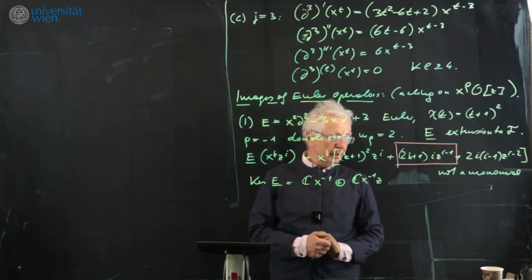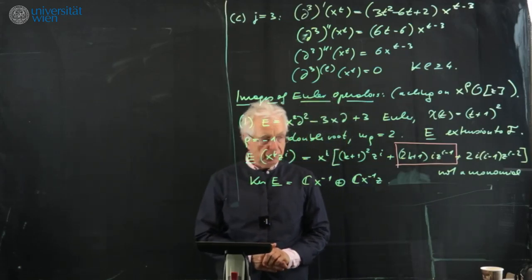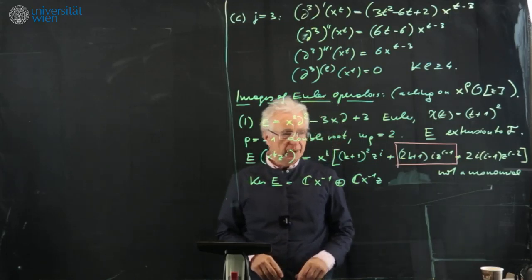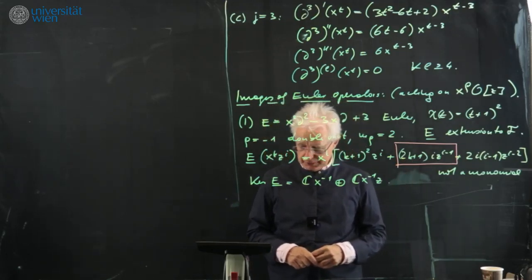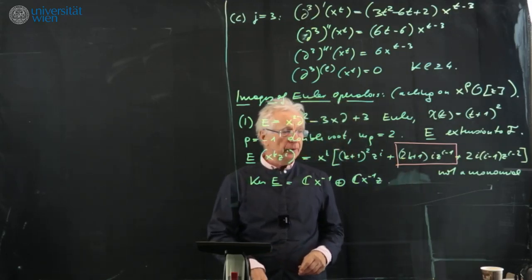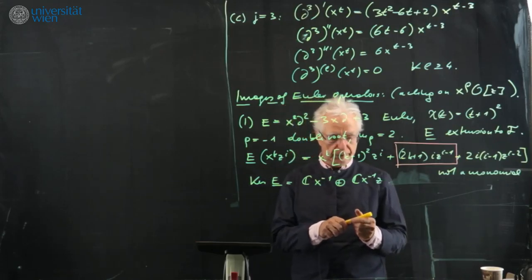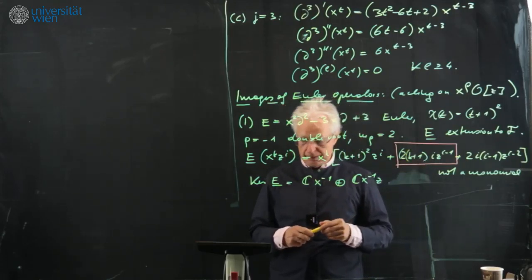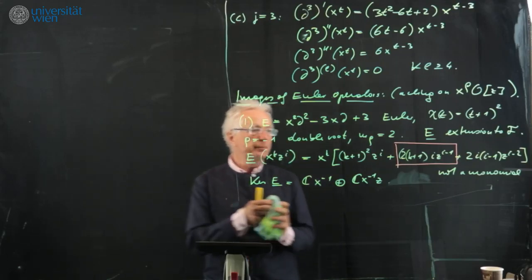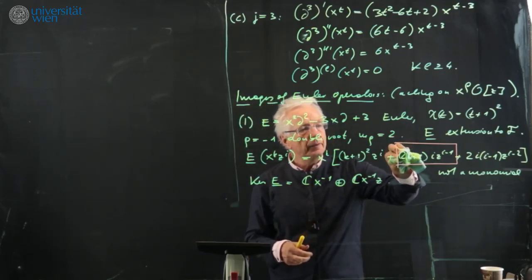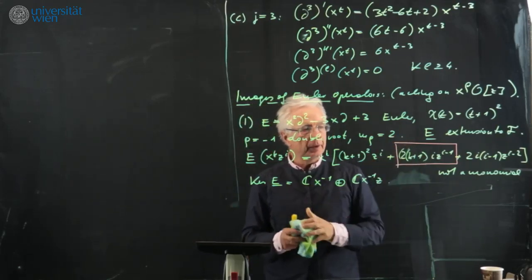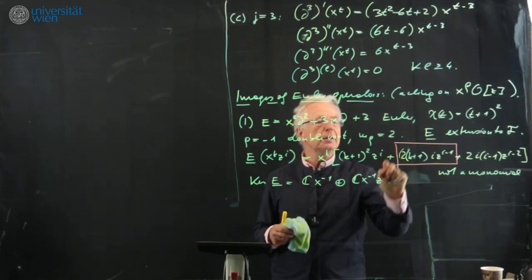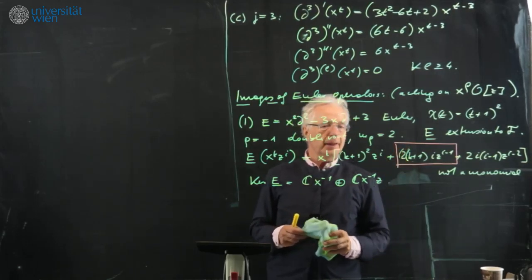After the break: as you probably noticed the error was quite stupid — this 2(k+1) is not the derivative of (k+1)^2 as I wrote, it is of course 2 times (k+1). So the corrected formula stands and the kernel computation is okay.